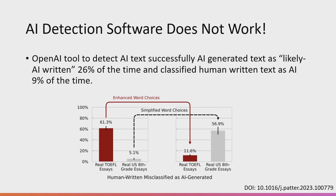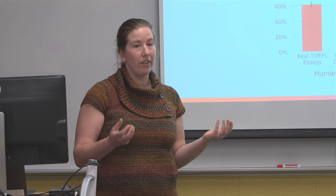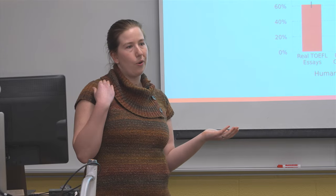Plagiarism and cheating led to the creation of AI detection software. OpenAI, the company that created ChatGPT, released their own plagiarism detection software — but it doesn't work. It was able to successfully identify AI-generated text only 26% of the time, and it also misclassified human-written text as AI 9% of the time. These are pretty poor stats for a tool we're using to detect AI-generated content.